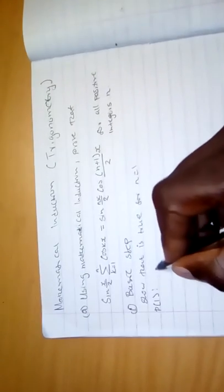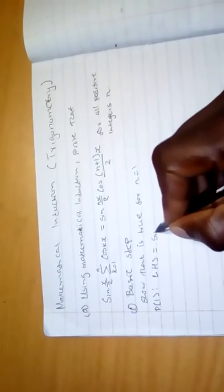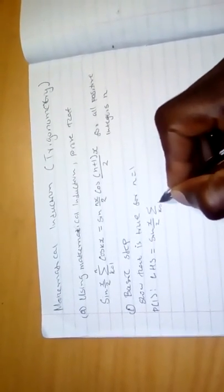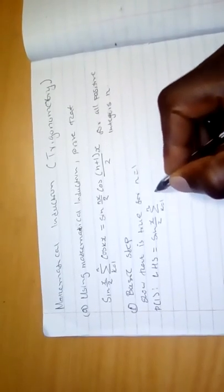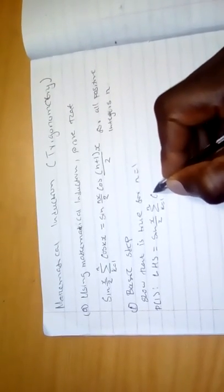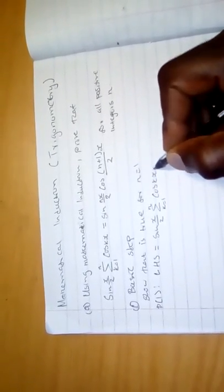So what do you need to do? Because now we are showing that the statement is true for n equals 1, we need to see P(1). For the left hand side, it equals sin(x/2) times the summation where k equals 1, and we are having cos(kx), which is going to be sin(x/2).